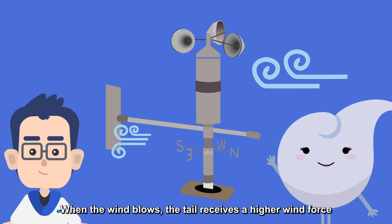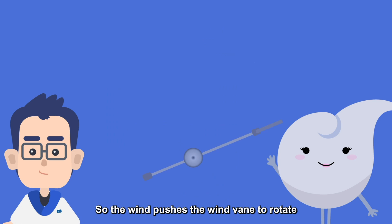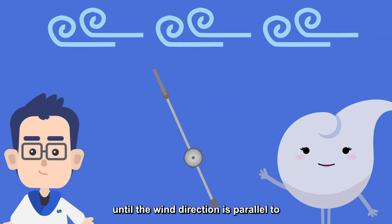The area of the tail is larger than the head of the wind vane. When the wind blows, the tail receives a higher wind force. So, the wind pushes the wind vane to rotate until the wind direction is parallel to the direction of the wind vane.